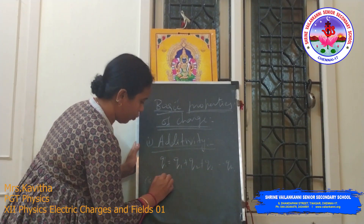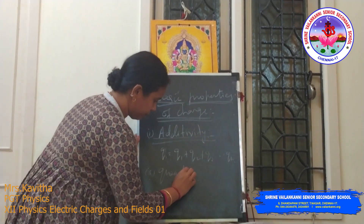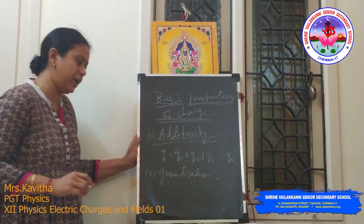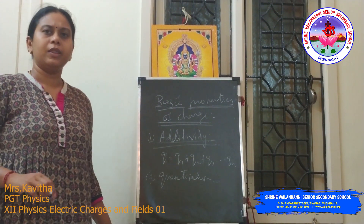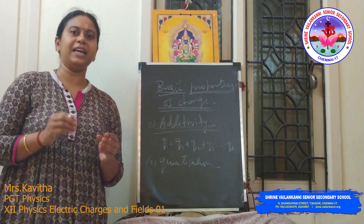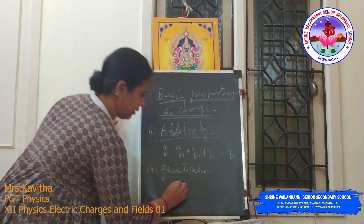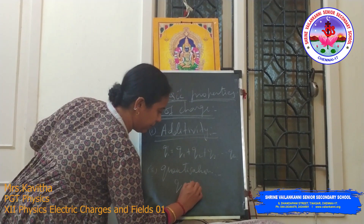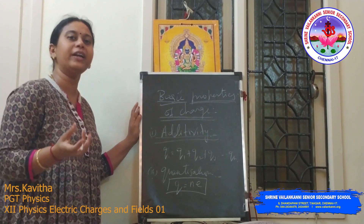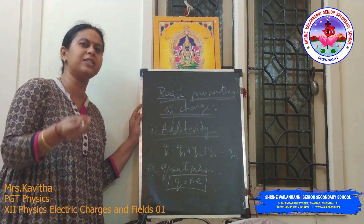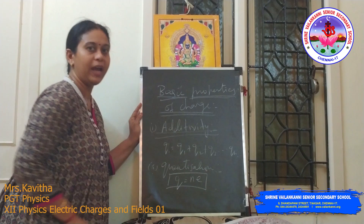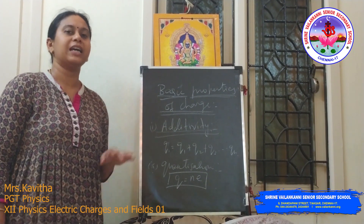The second property is quantization. Quantization means the charge of a body is the integral multiple of the basic unit of charge — that is, q = ne, where e is the charge of an electron. This is called the quantum of charge.